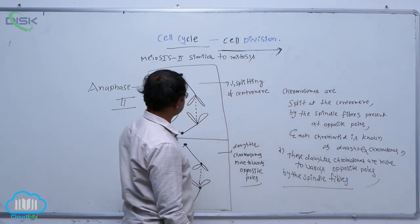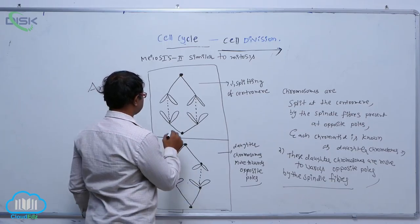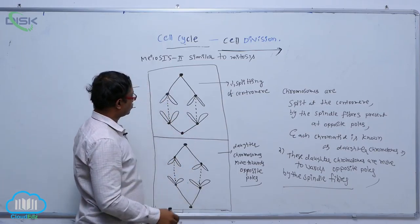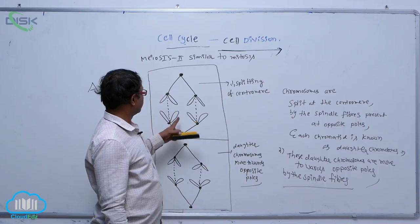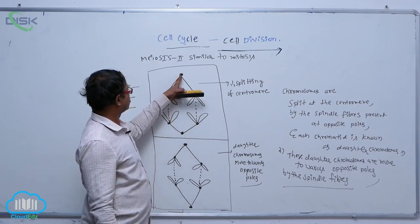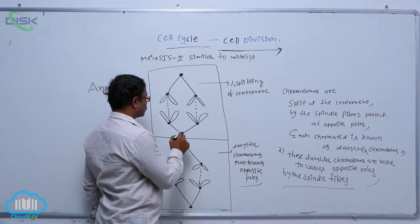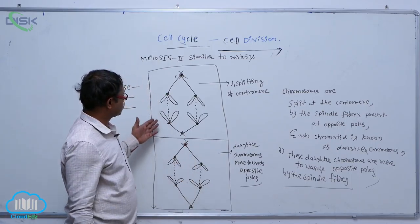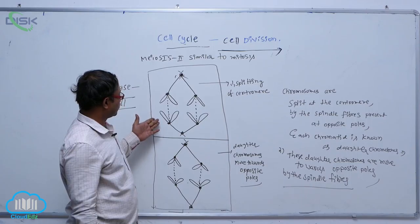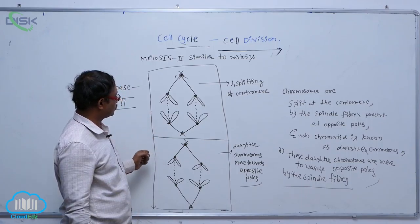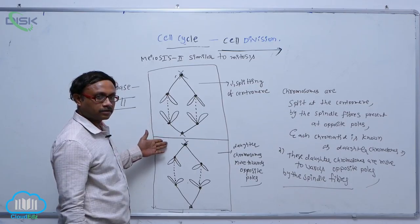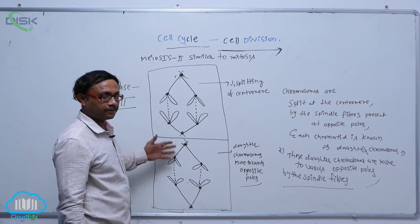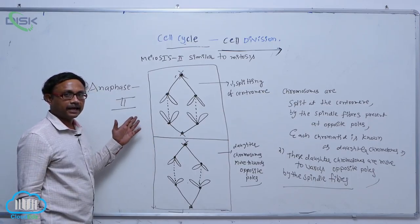This involves the splitting of chromosomes at the centromere by the spindle fibers. Each chromatid is also known as the daughter chromosome, and these daughter chromosomes move towards the opposite poles by the spindle fibers. That is known as anaphase 2.